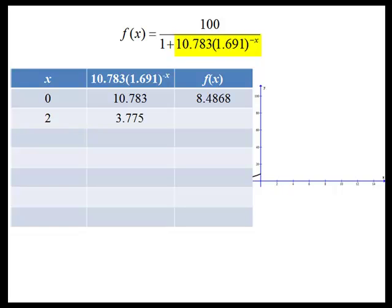It will decrease because it has a negative exponent, causing the denominator to decrease and the overall function value to increase. So as x continues to increase, we see that exponential piece start to go smaller and smaller, and the function values actually increase.